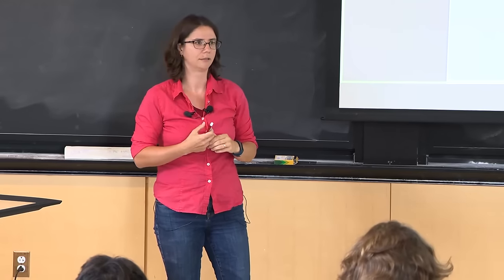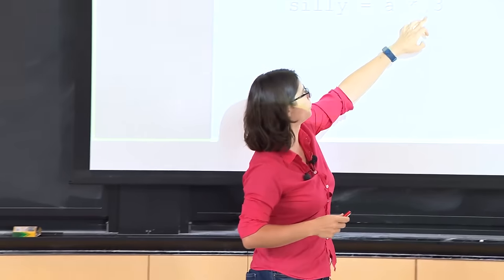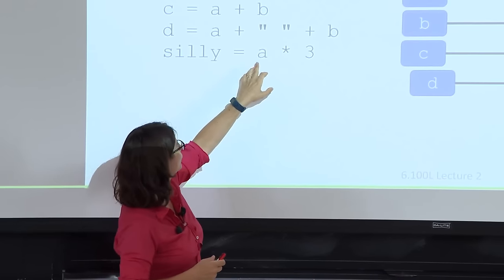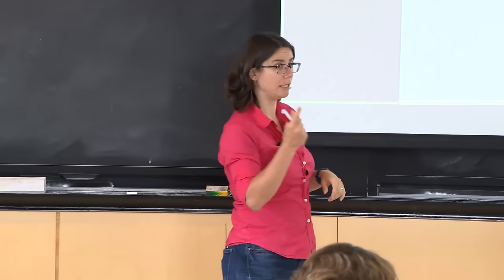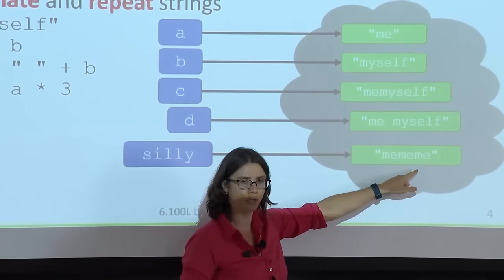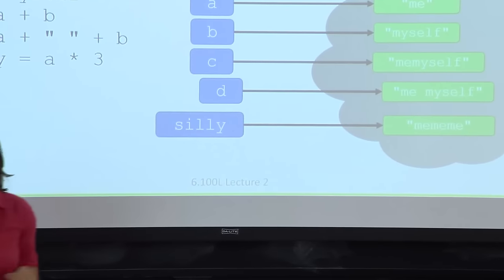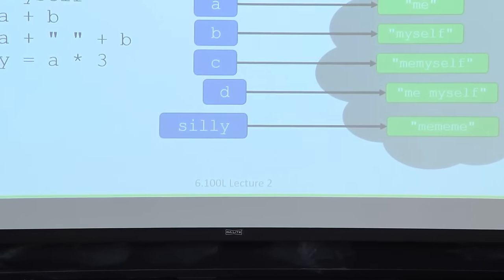The star operator works between a string and a number in either order. It repeats the string that many times. So a times 3, where a is 'me', creates a new object 'mememe'. This is then bound to the name silly. Any time you want that string, just use the variable name silly.